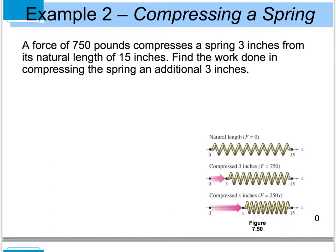Example two: a force of 750 pounds compresses a spring 3 inches from its natural length of 15 inches. We want to find the work done in compressing the spring an additional 3 inches. Looking at the diagram, the natural spring is at rest, a force of 750 pounds has already compressed it 3 inches, and we want to compress it another 3 inches. If you've ever tried to compress a spring, it gets harder and harder the more it's compressed — we'll prove that mathematically.